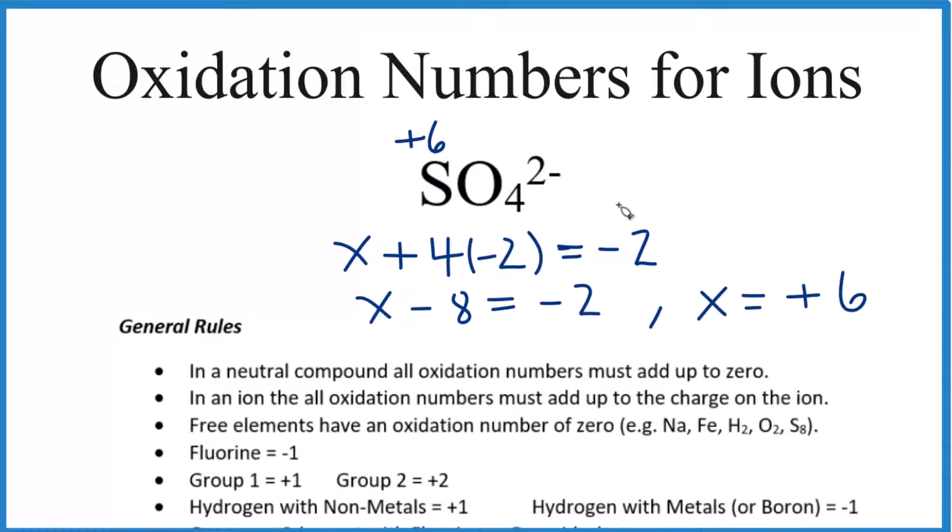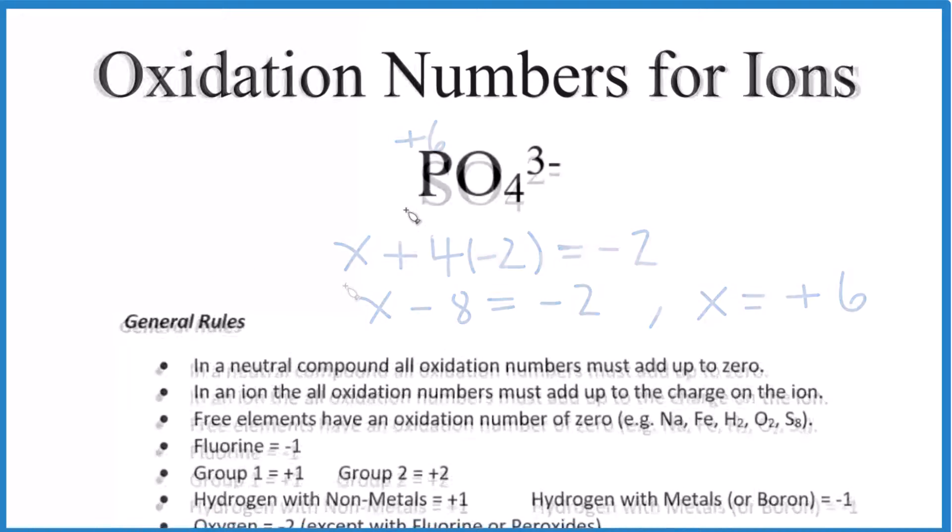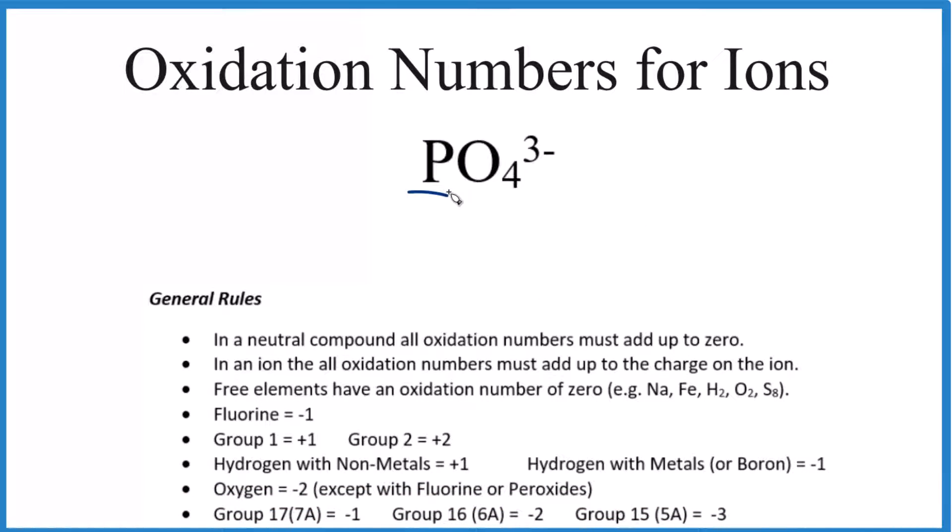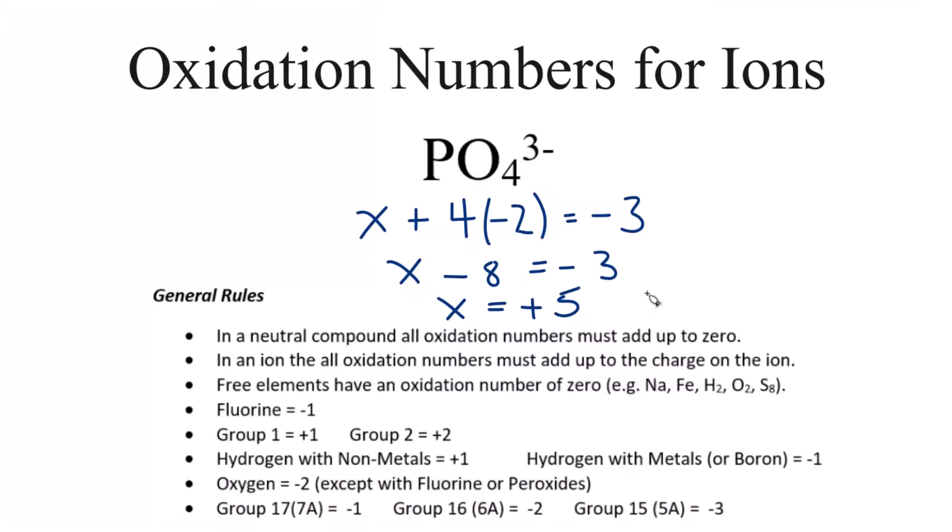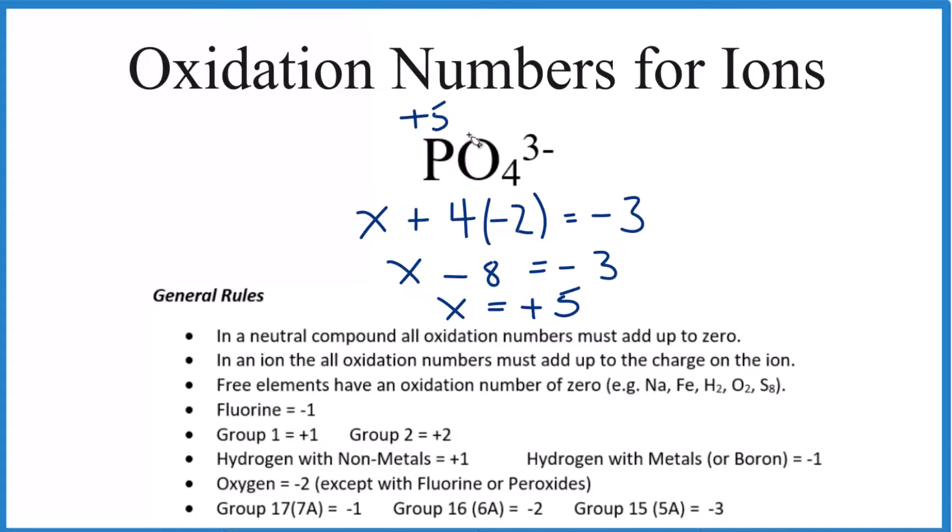Let's try another one. Pause, find the oxidation number for the phosphorus here in the phosphate ion. We end up with phosphorus has an oxidation number of plus 5, and again we said each oxygen is negative 2.